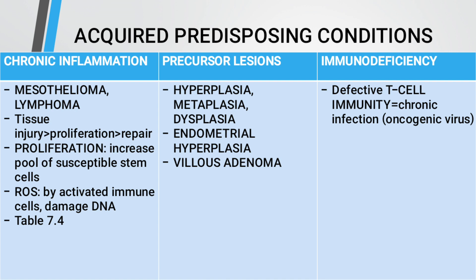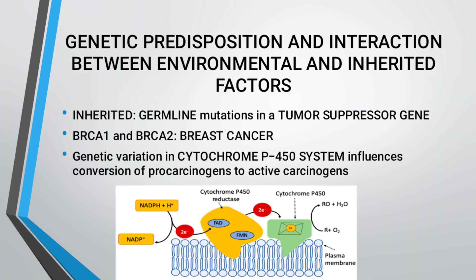Acquired predisposing conditions include chronic inflammation — mesothelioma, lymphoma, tissue injury, proliferation, and repair — leading to increased pool of susceptible stem cells or reactivated immune cells that damage DNA. Conditions include metaplasia, dysplasia, and endometrial hyperplasia. Immunodeficiency with defective T-cell immunity causes chronic infection by oncogenic viruses. Genetic predisposition includes interactions between environmental and inherited factors, such as germline mutations in tumor suppressor genes. BRCA1 and BRCA2 mutations cause breast cancer.